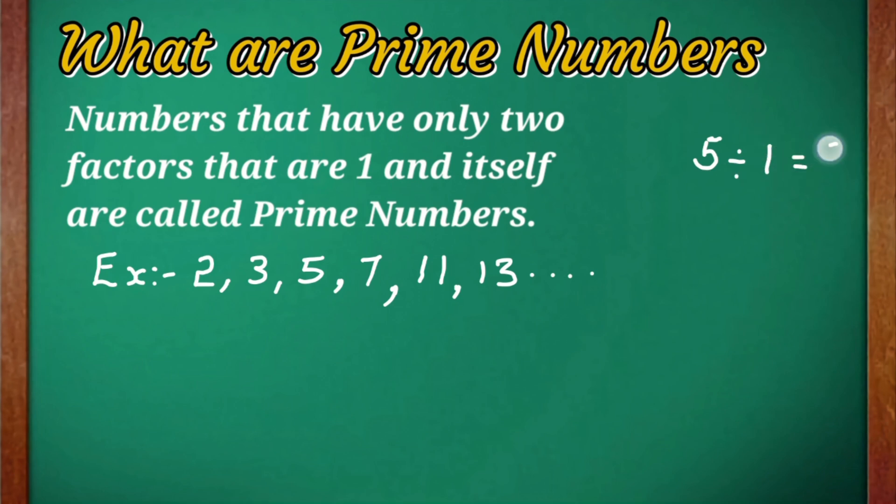For example, if we take 5: 5 can be divided completely by 1, which gives you 5, and 5 can also be divided completely by itself—that is, 5 divided by 5 gives you 1. So the factors from which 5 is getting divided are 1 and 5. That means it has only two factors: 1 and 5, or itself.